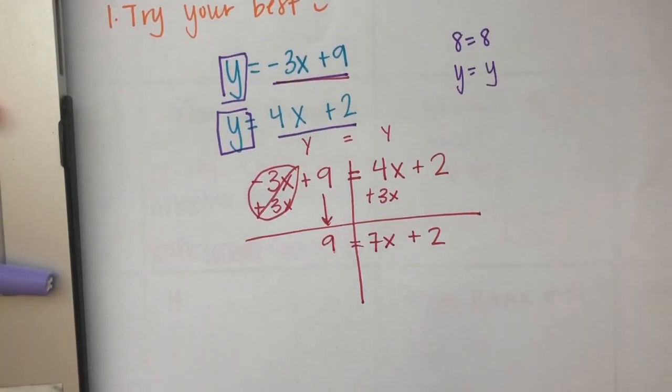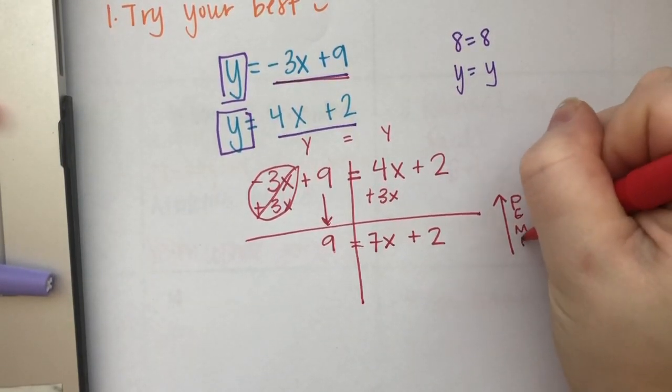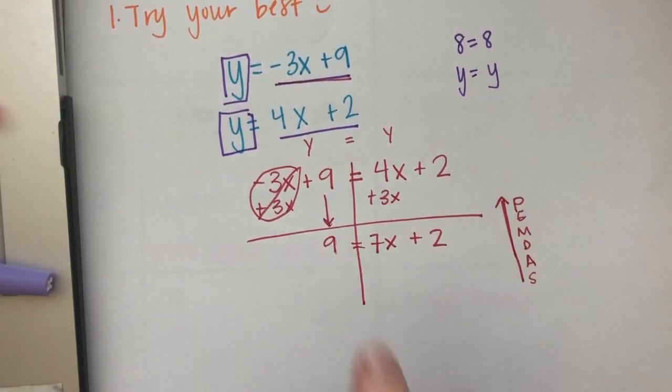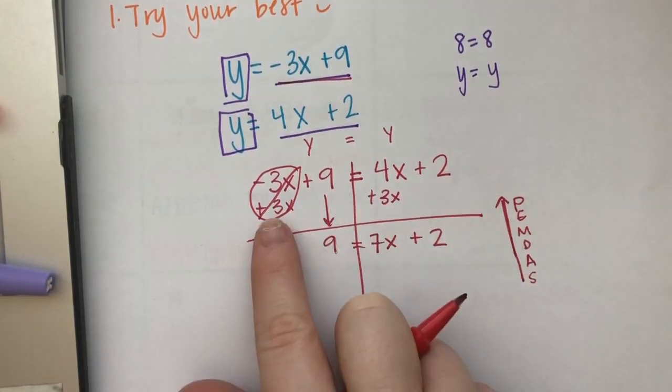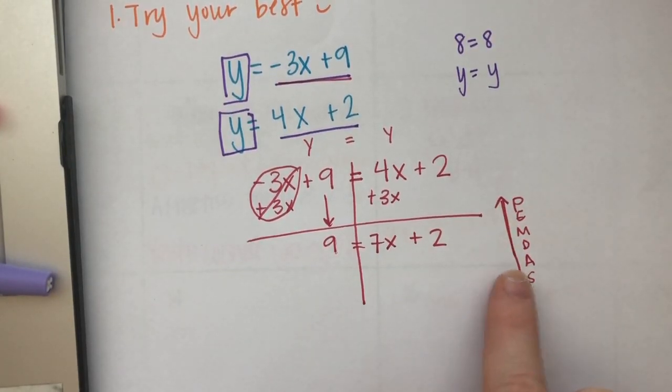All right, so we're using those same steps, reverse PEMDAS, and I forgot to ask the questions. So our questions are, can I simplify the left or right side? My bad, you guys. We couldn't simplify. Okay, so my next question is, are all my variables together by themselves? No. So we had to move that over there. Now we're doing reverse PEMDAS. Okay, if you need a refresher, that's all in last week. So we add and subtract first.